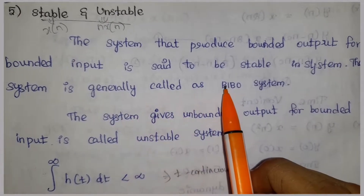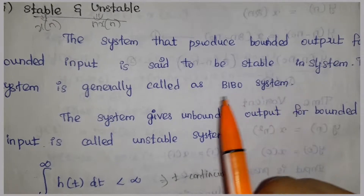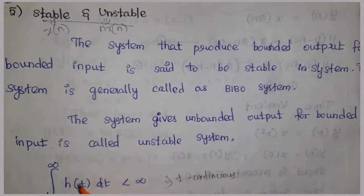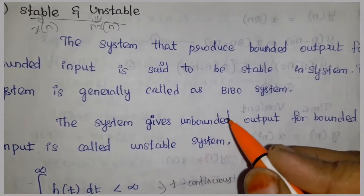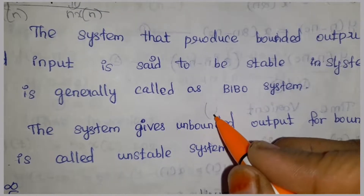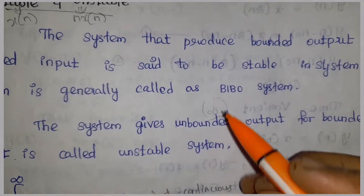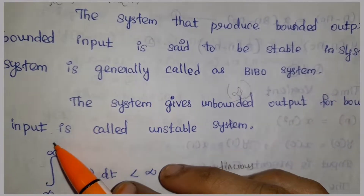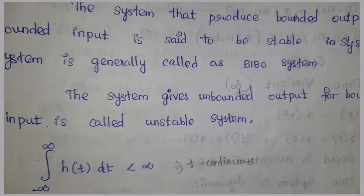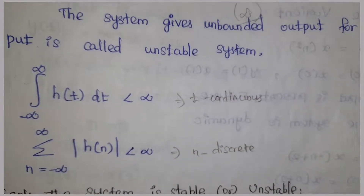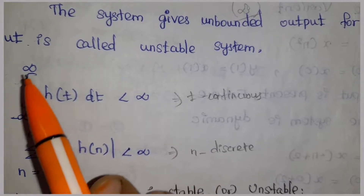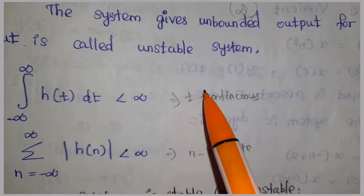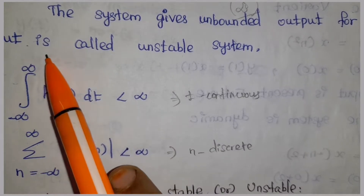What is meant by Unstable? The system that gives unbounded output for bounded input is called an Unstable System. The stability condition: if the limit is finite, the value is bounded — that means the system is stable. If the limit goes to infinity, the value is unbounded — that means the system is unstable. For a continuous system, the condition is: integral from minus infinity to plus infinity of |h(t)| dt — if this is finite, the system is stable.